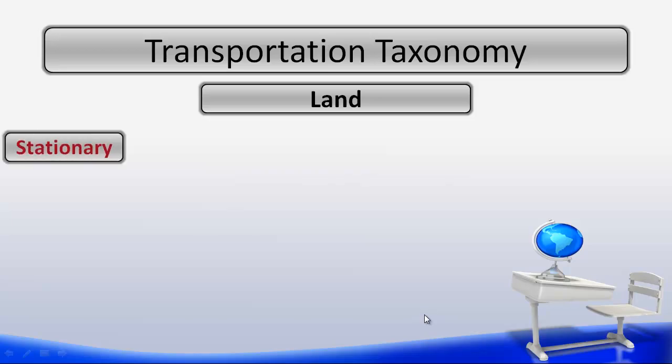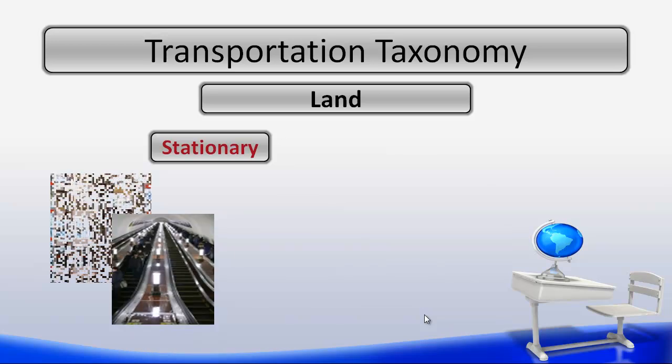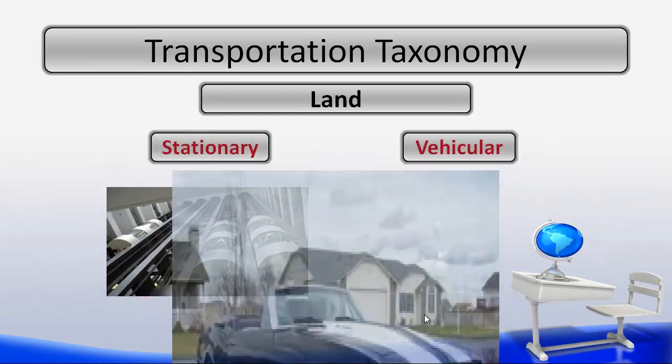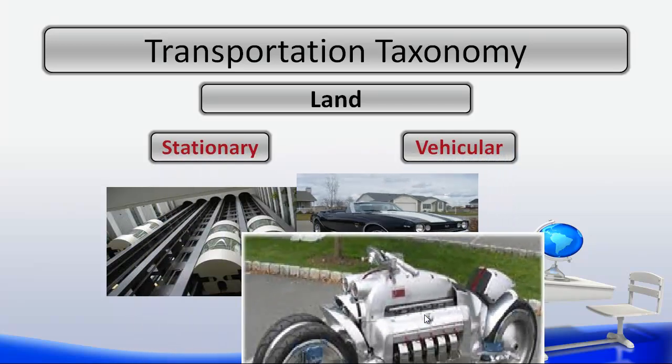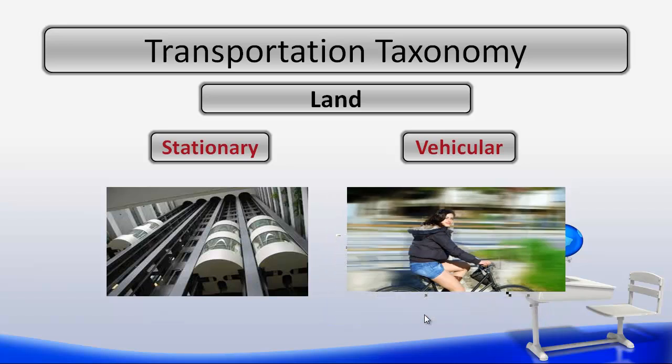To discuss our land transportation, examples of this based on the stationary subsystem would include elevators, conveyor belts, escalators, and pipelines. Some examples of vehicular transportation would include cars, trains, bikes, motorcycles, skateboards, scooters, and many, many more modes of transportation.